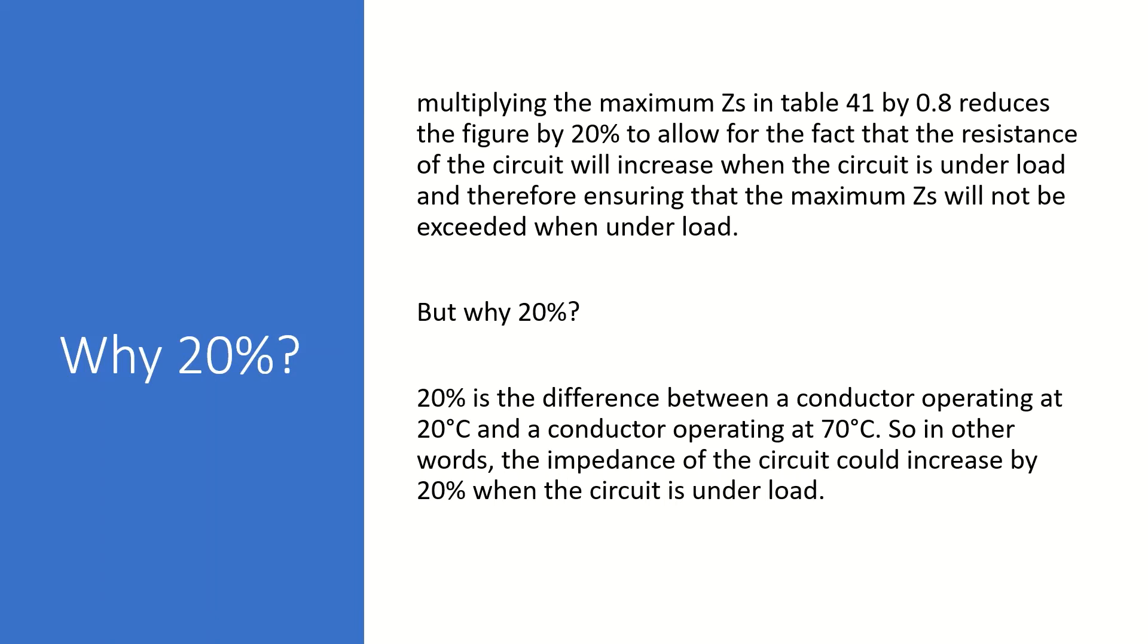But why 20%? Well, 20% is the difference between a conductor operating at 20 degrees C and a conductor operating at 70 degrees C. So in other words, the impedance of the circuit could increase by as much as 20% when the circuit is under load.